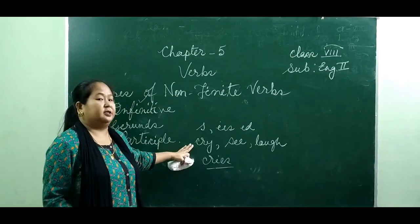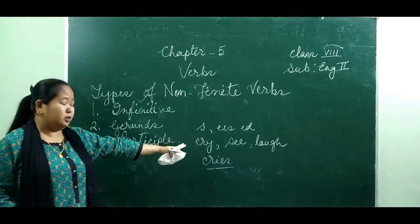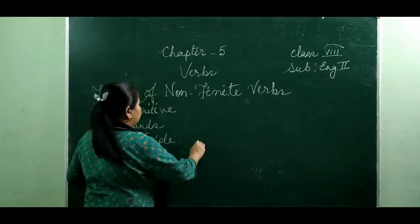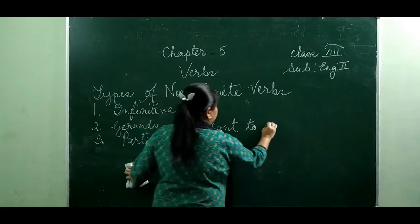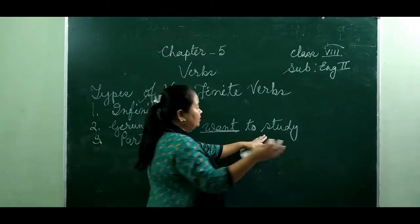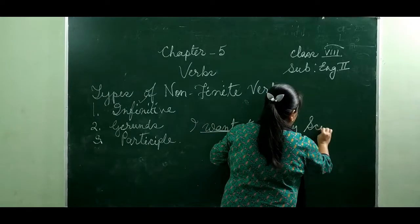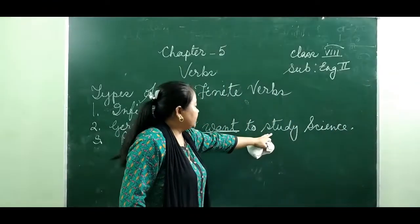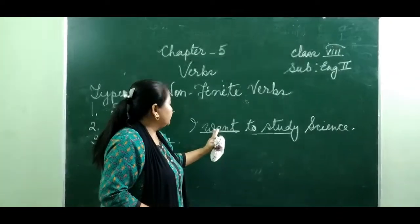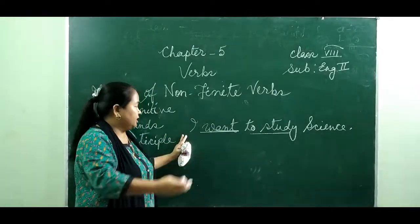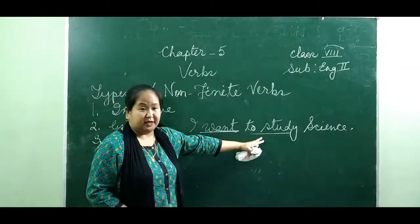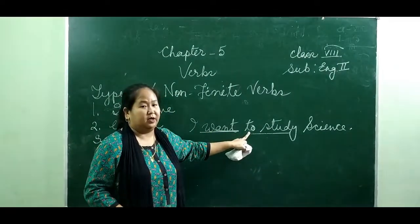Infinitive is generally preceded by the preposition 'to' and followed by a verb. Sometimes we use infinitive without 'to' — that we call bare infinitive. For example: 'I want to study.' Here 'want' is the main verb and 'to study' is the infinitive. 'To study' is not a finite verb because it doesn't indicate any tense — it will not change according to the time of action, person, or number. Infinitive with 'to' is called full infinitive or to-infinitive.